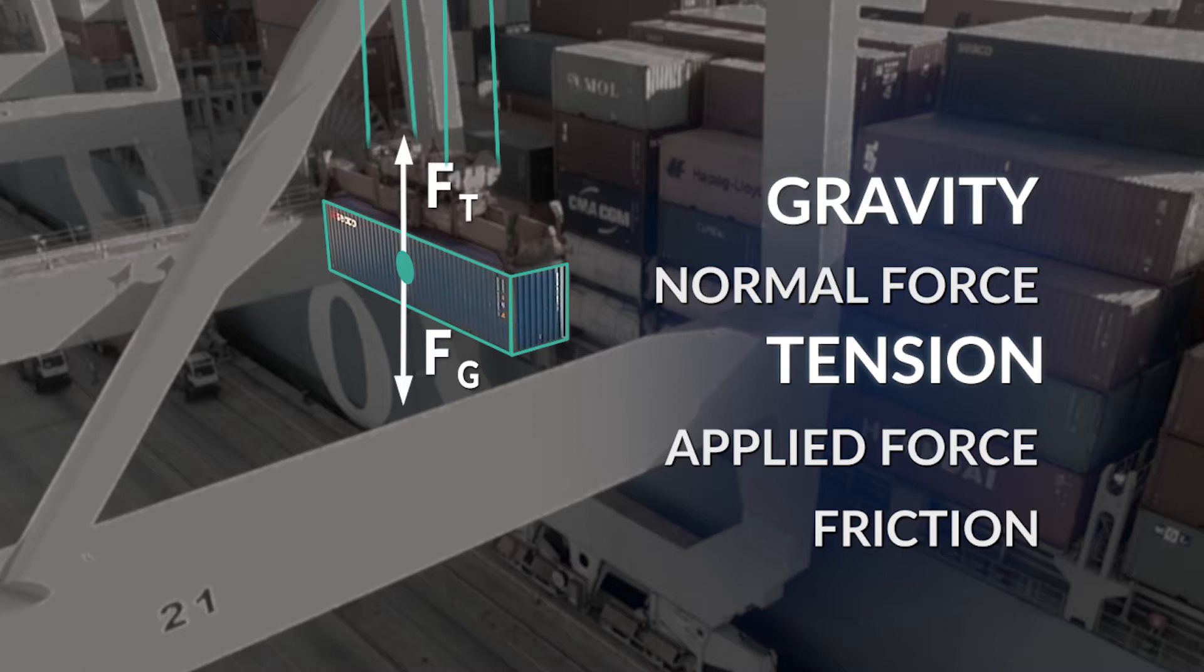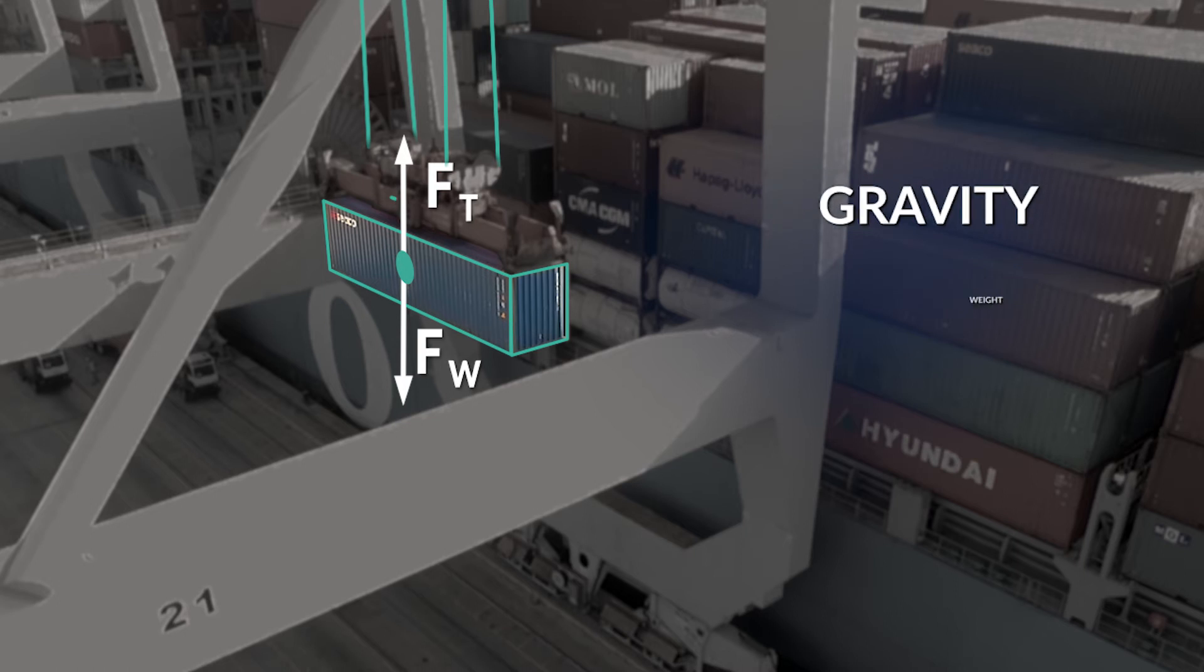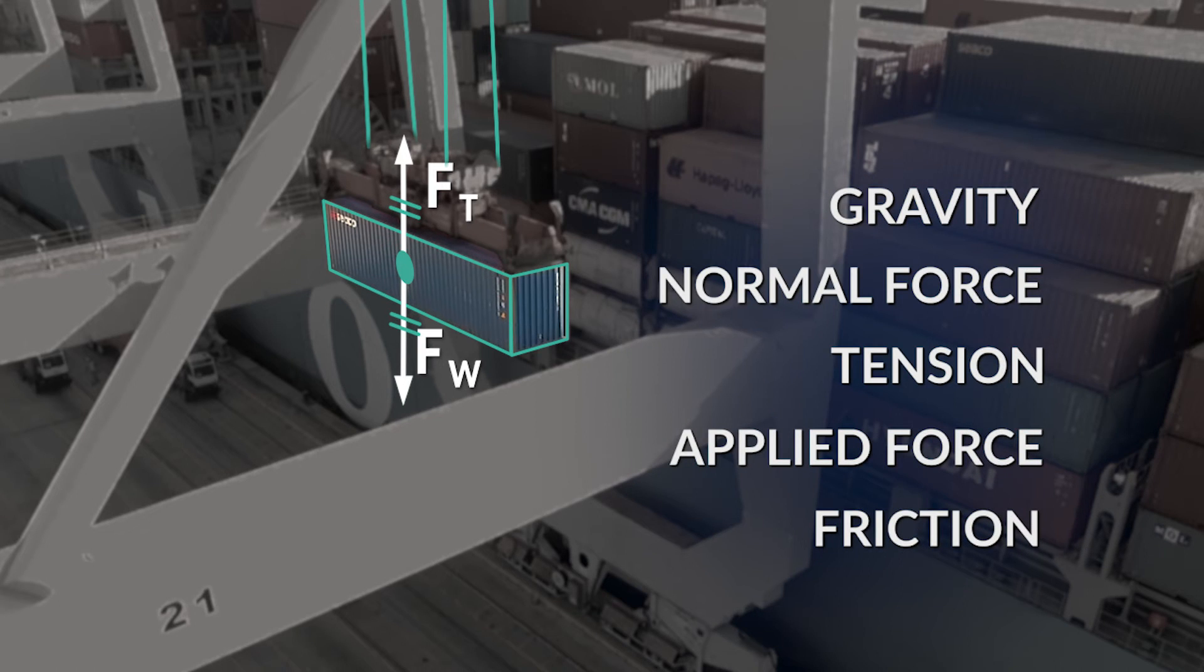Any guesses? Even though it's suspended, gravity in the form of weight is still working on the container. So the downward force is weight with a downward arrow equal to the length of the arrow for tension and marked with an F sub W. So the force moving up is equal to the force down. Vectors are equal and balanced.